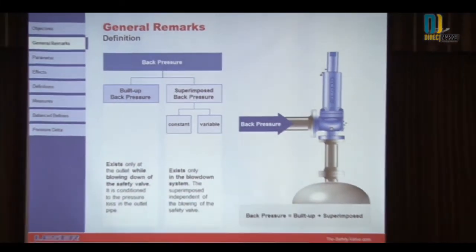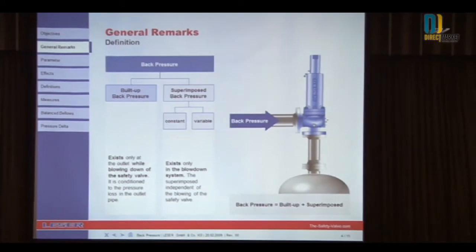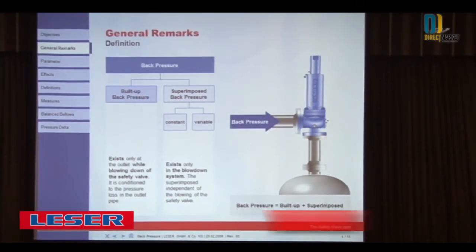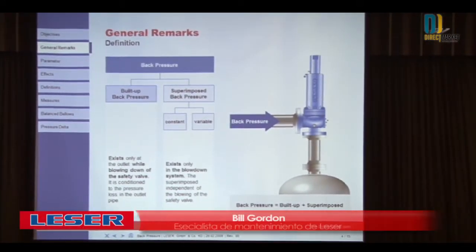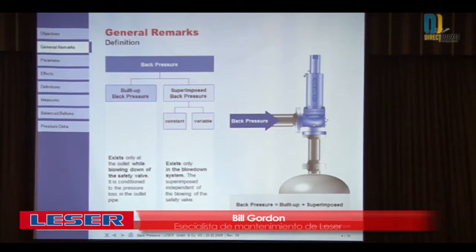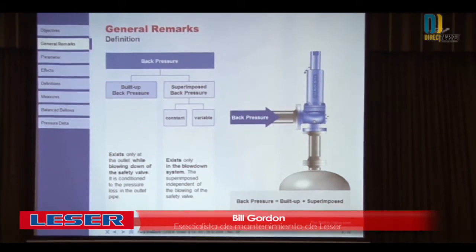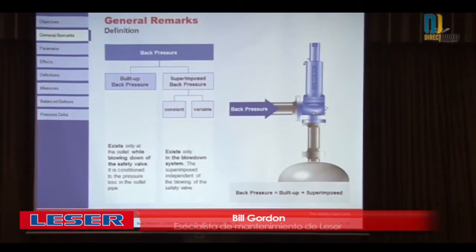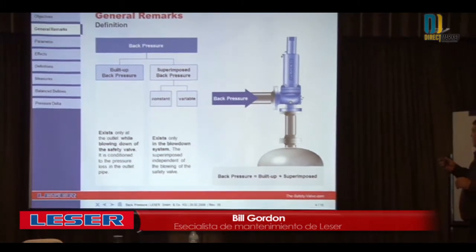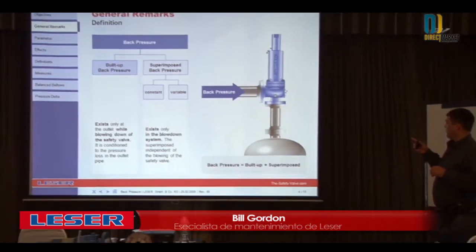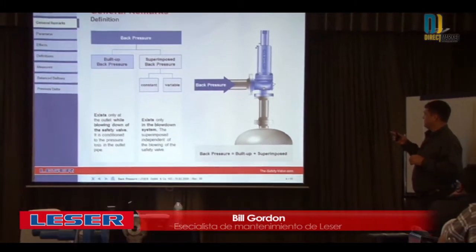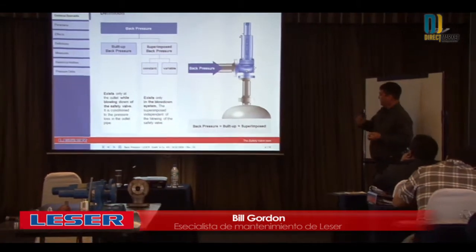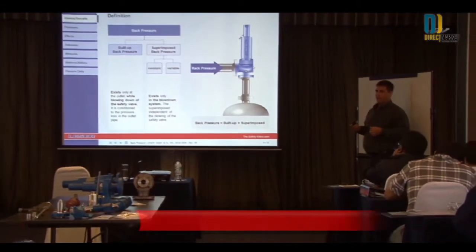There are two different types of back pressure: built-up back pressure and superimposed back pressure. Built-up back pressure exists only at the outlet while blowing down of the safety valve — so when the valve opens, it creates built-up back pressure.